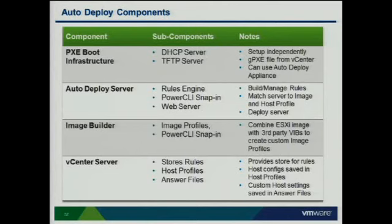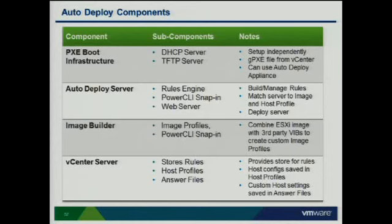The components of auto-deploy: the PXE boot infrastructure - which does not need to be dedicated to vSphere 5; if you have existing infrastructure, use it. If not, you need a DHCP server supporting options 66/67 and any TFTP server. The auto-deploy server binaries come on the vCenter installation media. If using the vCenter Server Appliance - the new web-based vCenter - the auto-deploy server comes bundled automatically. Image Builder is required to create the image, and vCenter is needed for host profiles where host information is stored.